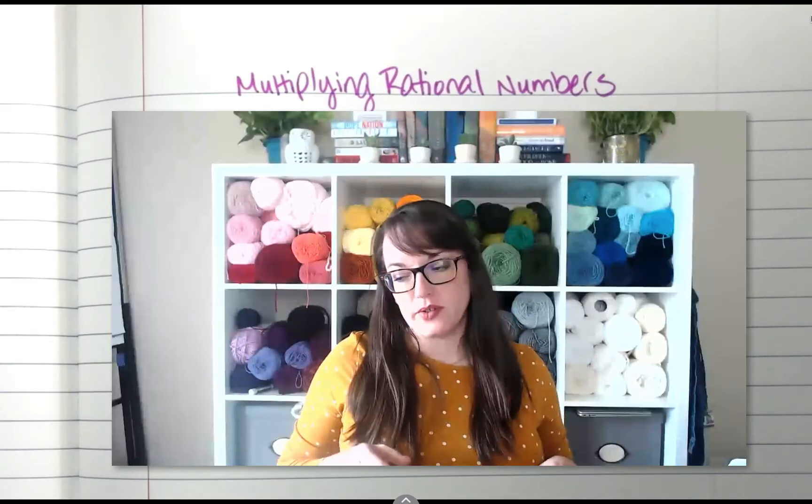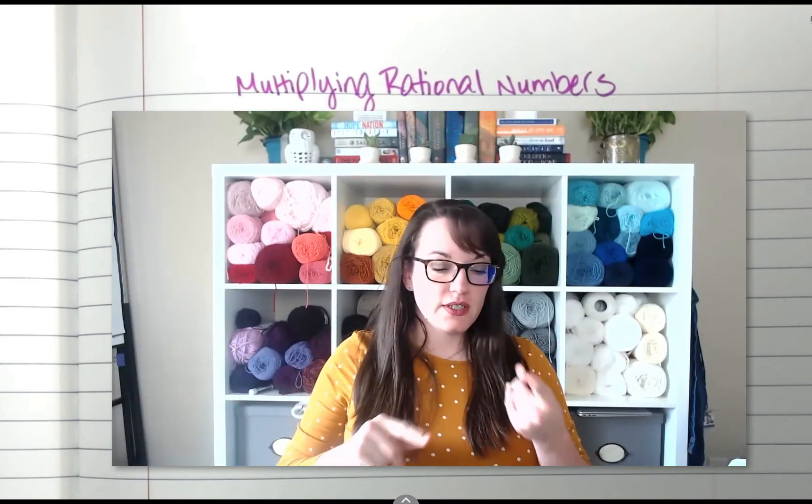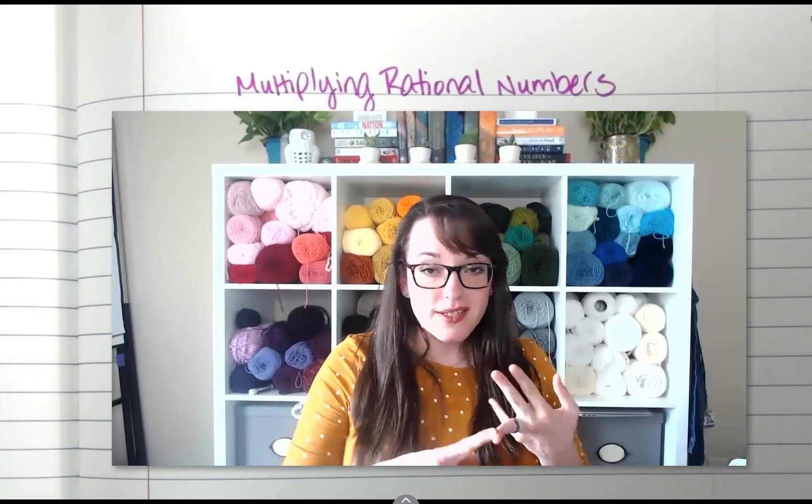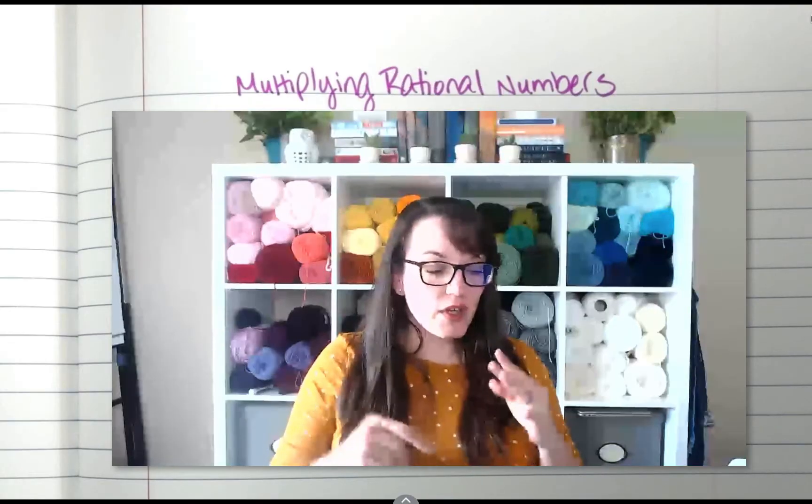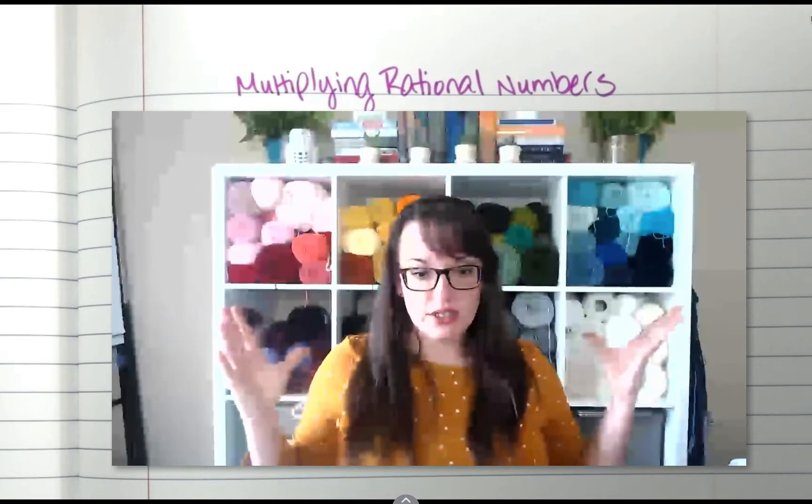And we've talked about rational numbers. Rational numbers are fractions, they're decimals, they're positive, they're negative. So what we're dealing with today is how do we multiply all of those types of numbers together.